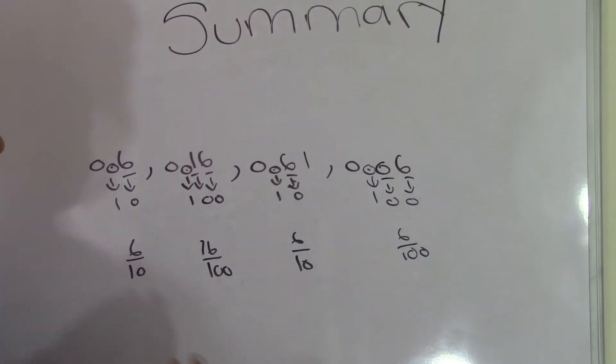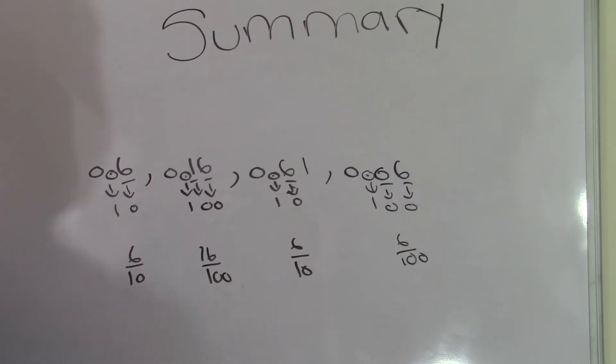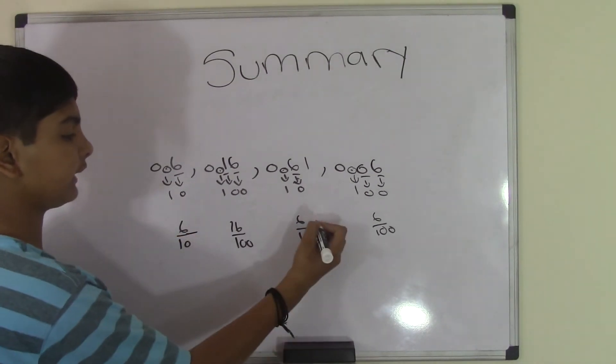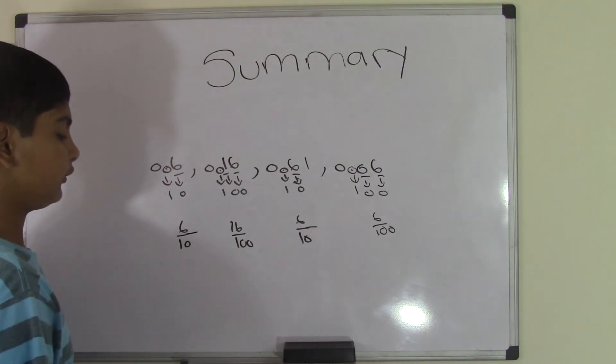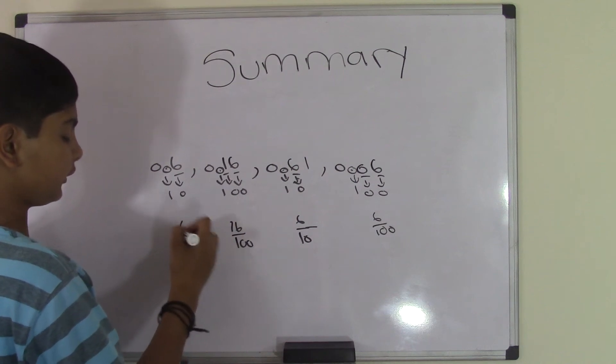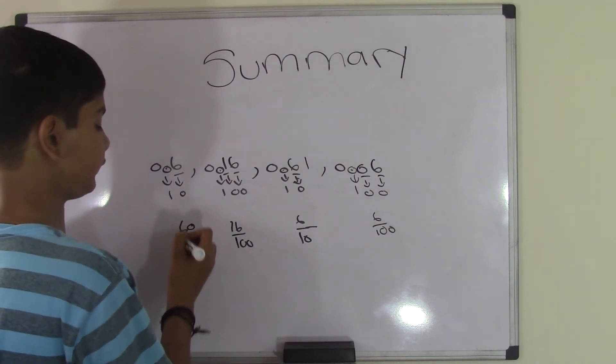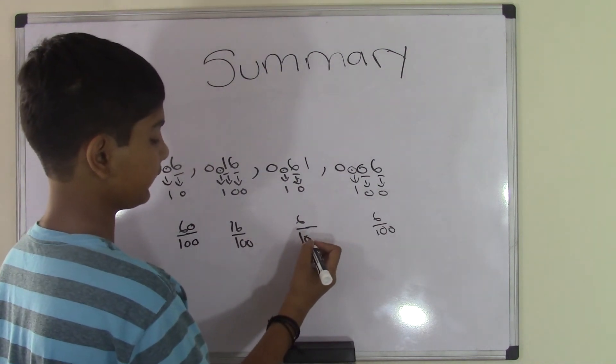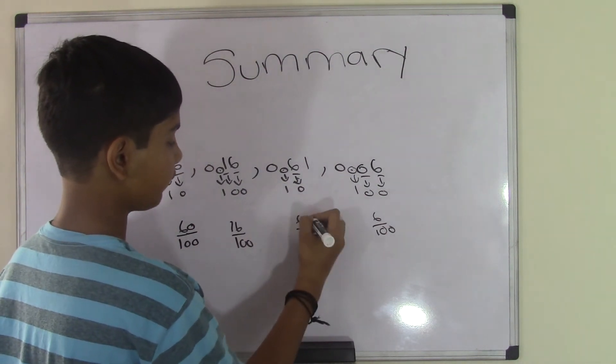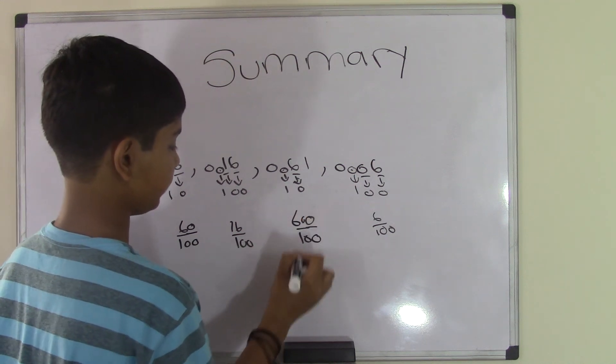Again, we have different place values. We have tenths and hundredths. To understand it better, all we need to do is change the tenths back into hundredths. To do this, just add a 0 in front of the tenth and do the same thing on top. Put a 0 and make that into 60 over 100. Do the same thing on this tenth. Put a 0, add a 0 on top too, and we get 60 over 100 as well.